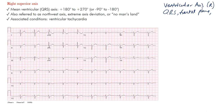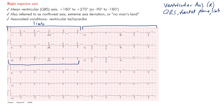The frontal plane includes the limb leads. On a standard EKG, the limb leads are the ones we focus on here. The horizontal plane includes the precordial leads. Because we're finding ventricular axis in the frontal plane, we focus on the limb leads: I, II, III, aVR, aVL, and aVF.